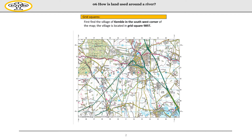For this lesson we are going to be focusing on grid squares and learning how to use them. We're going to be locating different places on the map. It would be ideal if you've got this booklet in front of you, either on Seesaw or if you've got the paper copy, so you have access to the maps.